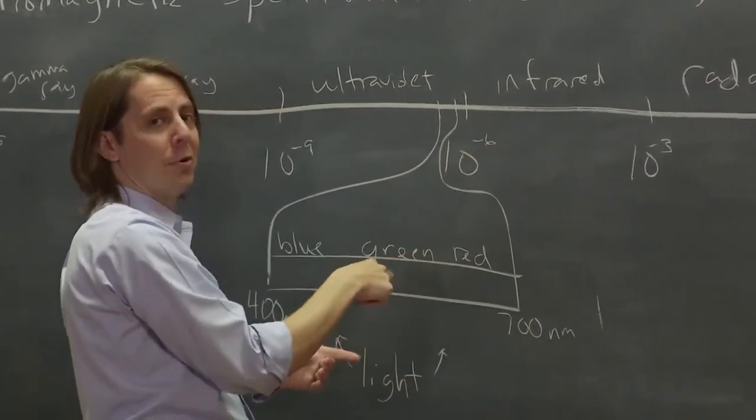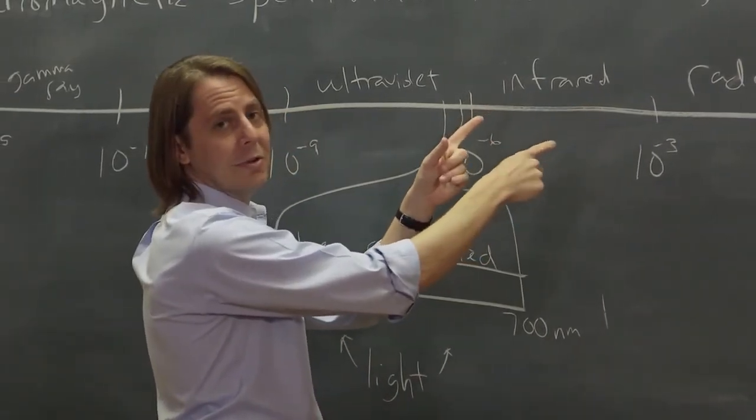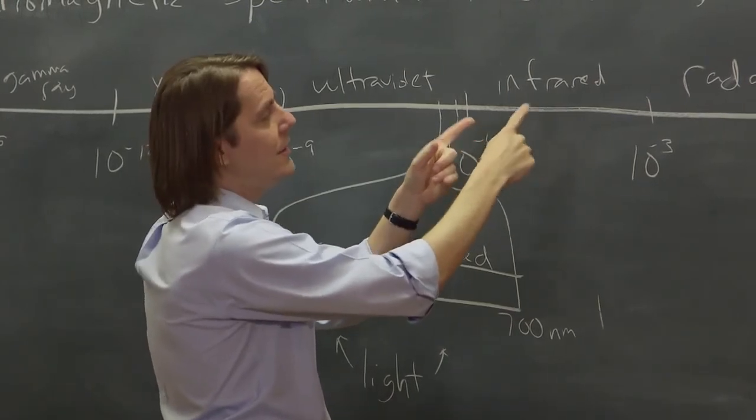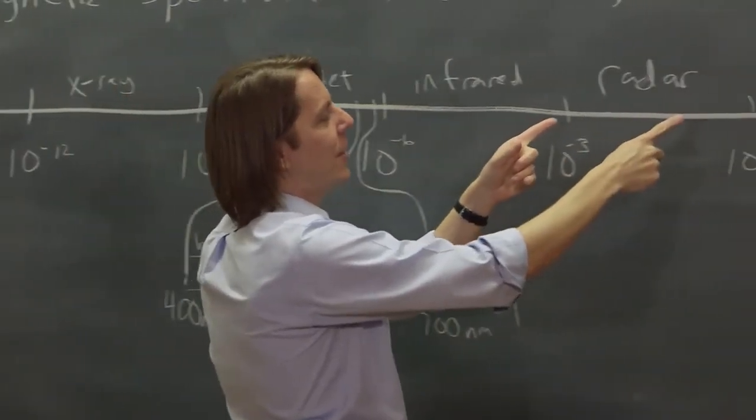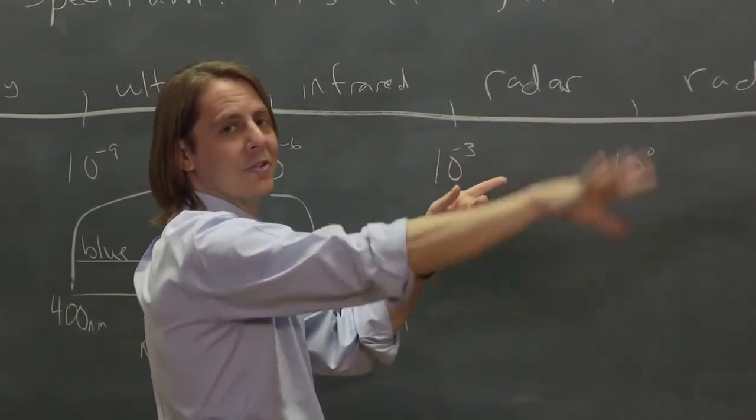But at lower energy, it can still make things vibrate. And that's what heat is. So infrared light heats things. And you go farther down, and then it won't even heat things. And then it just goes right through you. Radar, radio, that's why those can go very long distances. They're absorbed by the air, things like that.